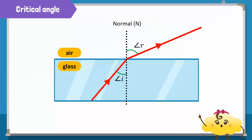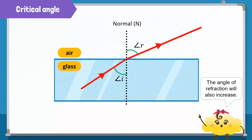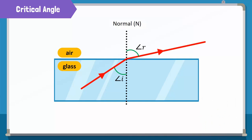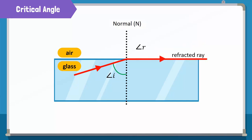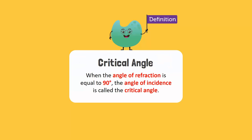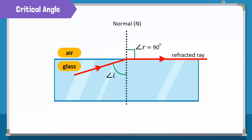What happens when the angle of incidence increases? When the angle of incidence increases, so does the angle of refraction. If the angle of incidence is gradually increased, a point comes when the refracted light travels along the boundary of the dense medium and the angle of refraction becomes 90 degrees. When the angle of refraction is equal to 90 degrees, the angle of incidence is called the critical angle. This is denoted by the letter C.